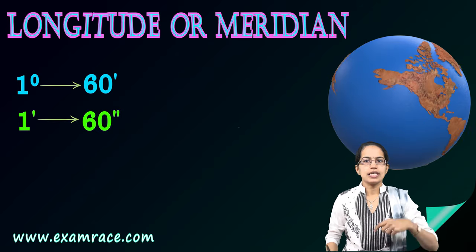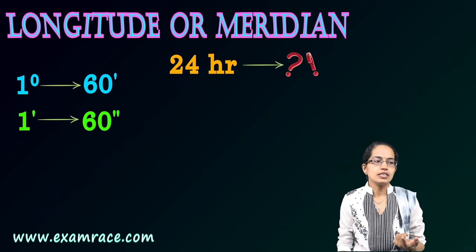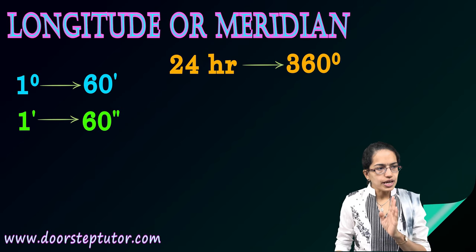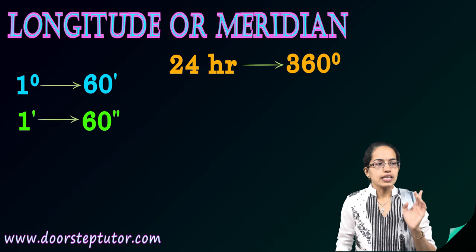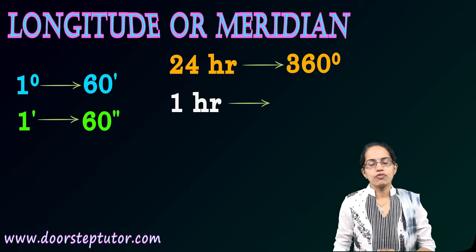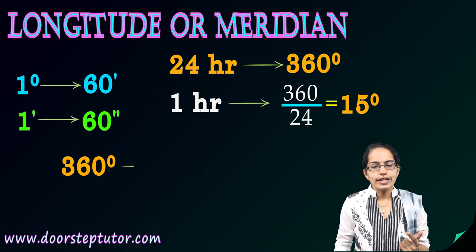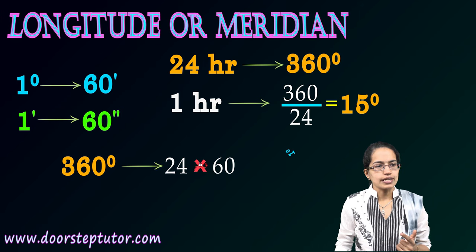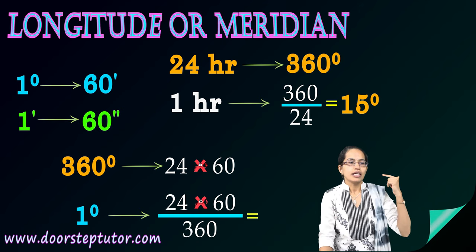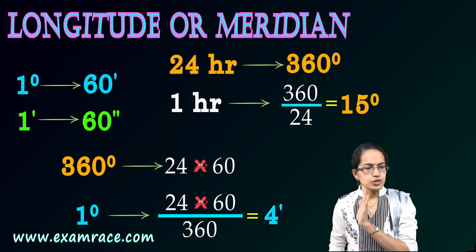A whole rotation takes 24 hours. In 24 hours, the earth moves 360 degrees. So the calculation for one hour can be further reduced to one degree. One degree equals four minutes, and that's how we understand the calculations and problems we would be solving later on.